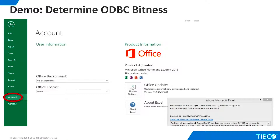ODBC requires different DSNs for 32-bit and 64-bit access. Therefore, our first step is to determine the bitness we need. This is not necessarily the bitness of the machine; instead, it is dependent on the bitness of the client software. To find the bitness of our version of Excel, we look at the Account tab, then click About Excel. We see that our version of Excel is 32-bit, even though it is running on a 64-bit machine. We now know that we must create a 32-bit ODBC DSN.